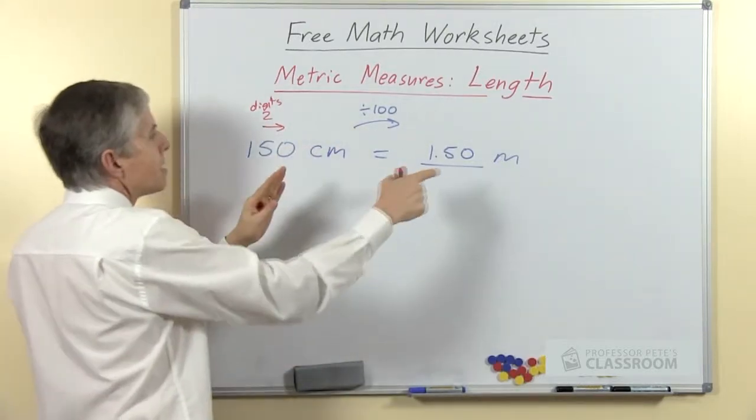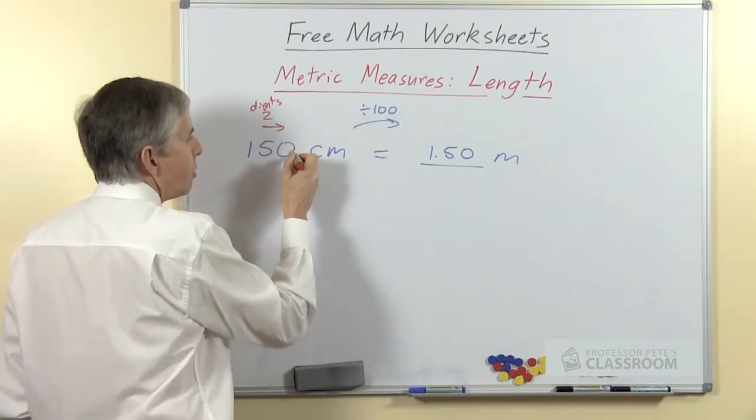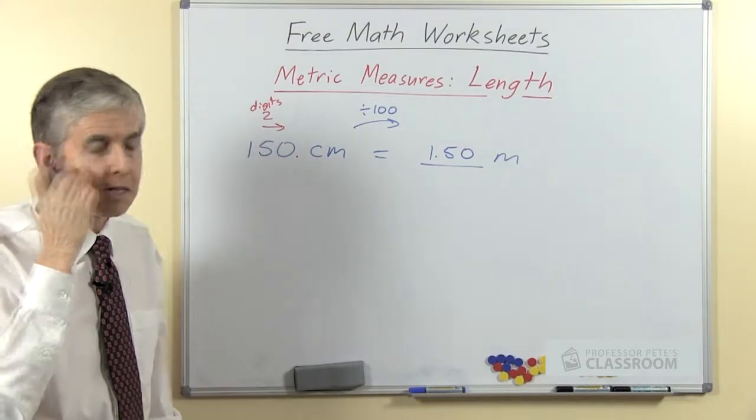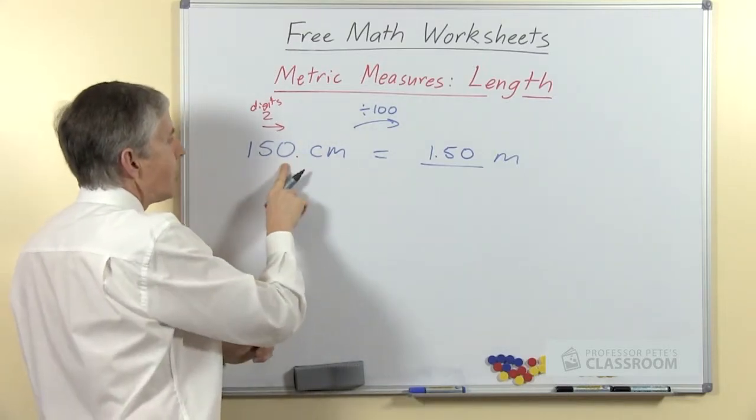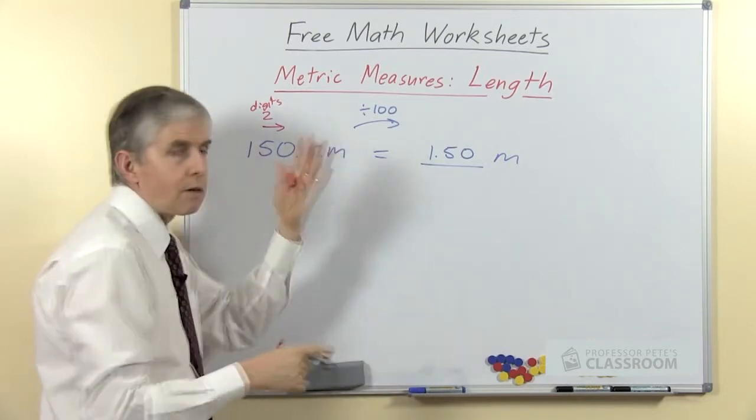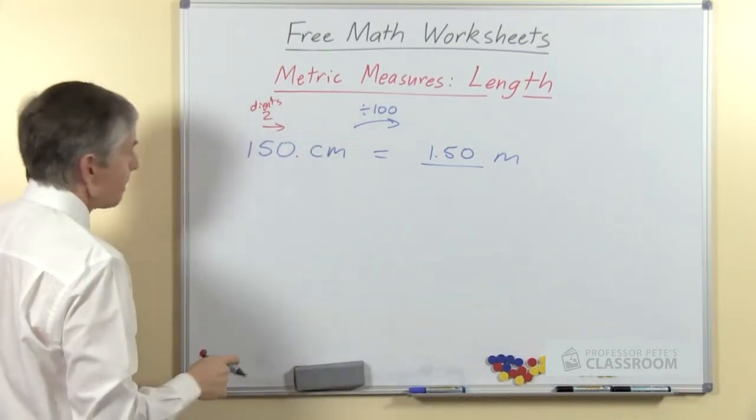If we move the digits two places, where's the decimal point at the moment? Well clearly it doesn't have one because we haven't written it, but that's a whole number, so the decimal must be just after the zero. If we move everything this way two places, the one will end up right there, the five will be just after the decimal. As I said, we can actually drop the zero because it's after the decimal point.